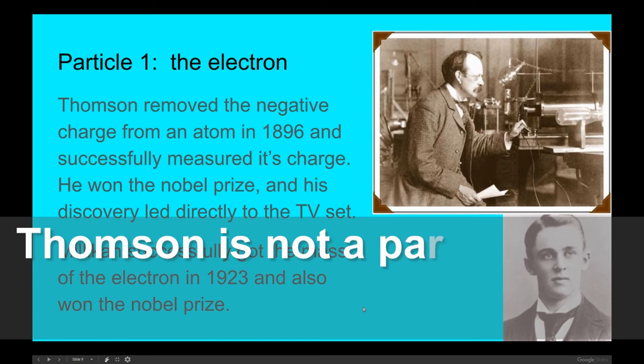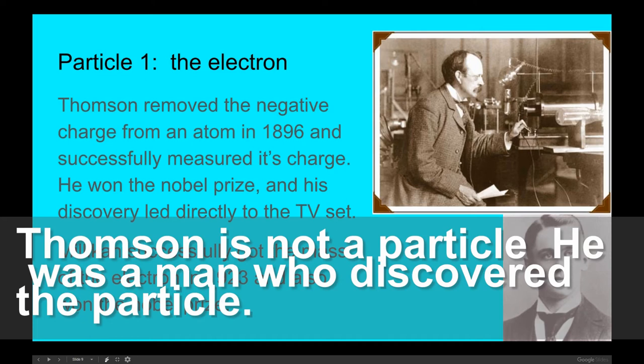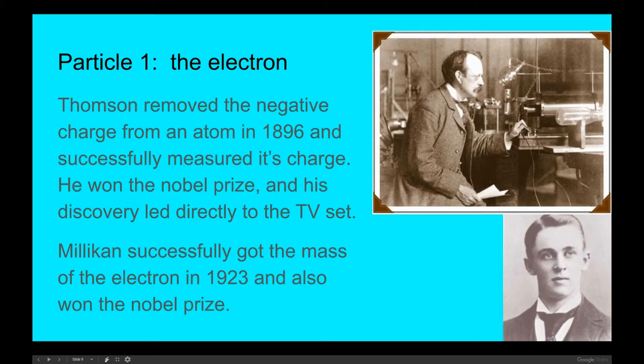The first particle discovered was Thompson himself. He succeeded in removing the negative charge from an atom in 1896 and successfully measured its charge, which is really, really, really small and is one of the fundamental constants or numbers in nature. He won the Nobel Prize for this, and his discovery led directly to the television set. Another man, Millikan, actually managed to measure the mass of the electron in 1923, and the mass of an electron makes the mass of the coronavirus look like a battleship, a fleet of battleships by comparison. So to be able to do this at the time period when half the science equipment was still made out of wood was bloody impressive.